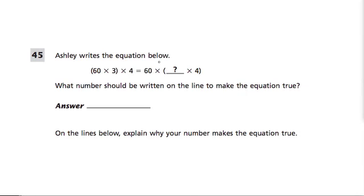Ashley writes the equation: 60 times 3 — that's in parentheses, so it comes first — then times 4, will be equal to 60 times, parentheses, blank times 4. What number should be written on the line to make the equation true?